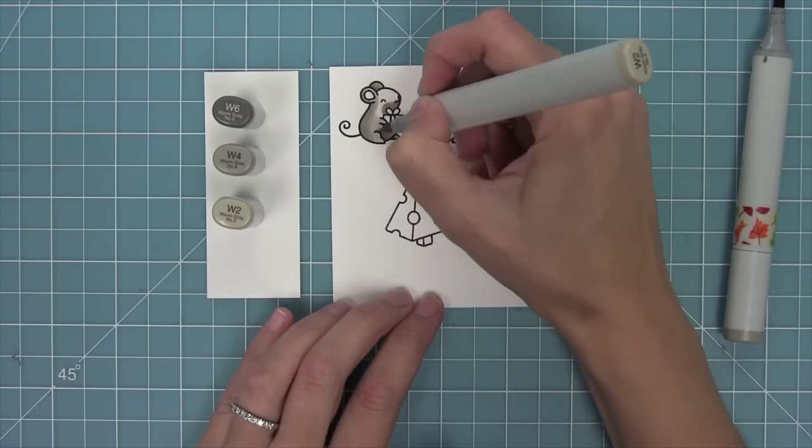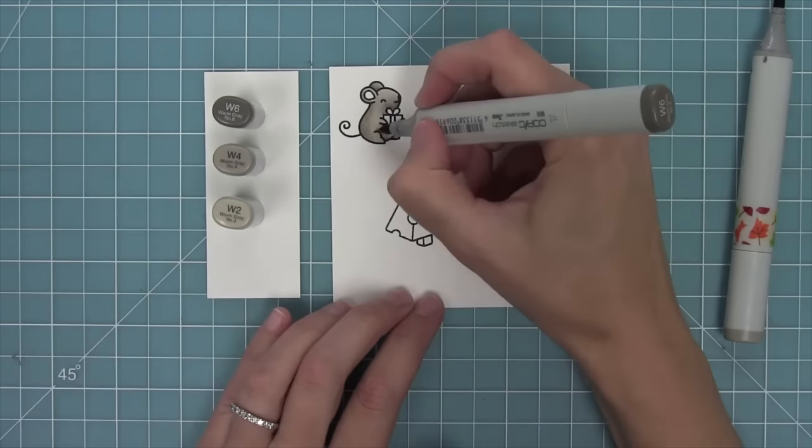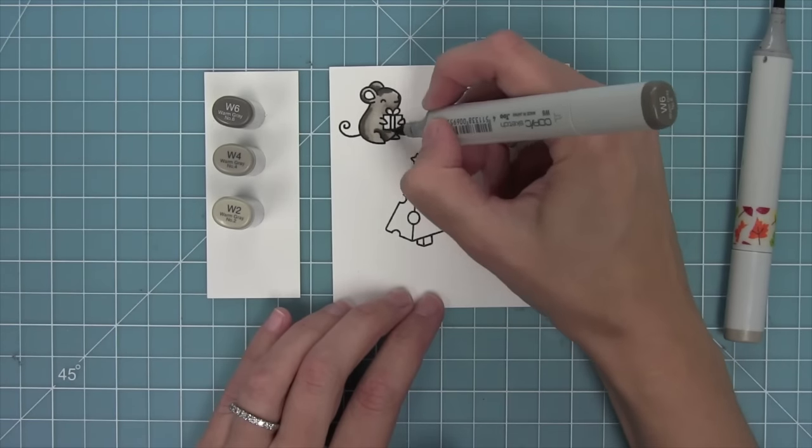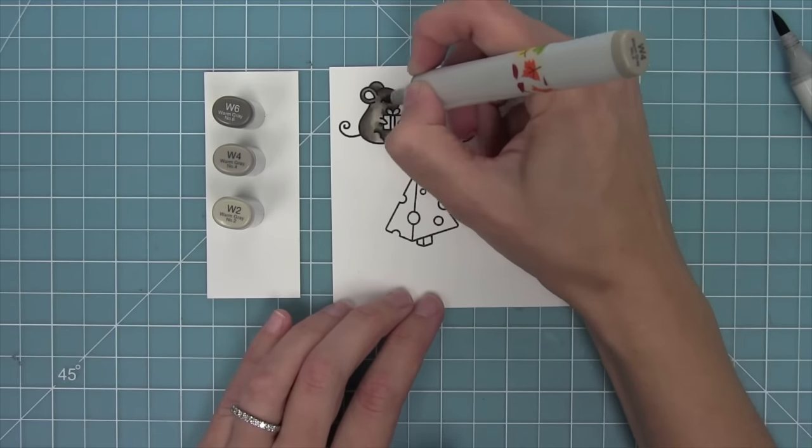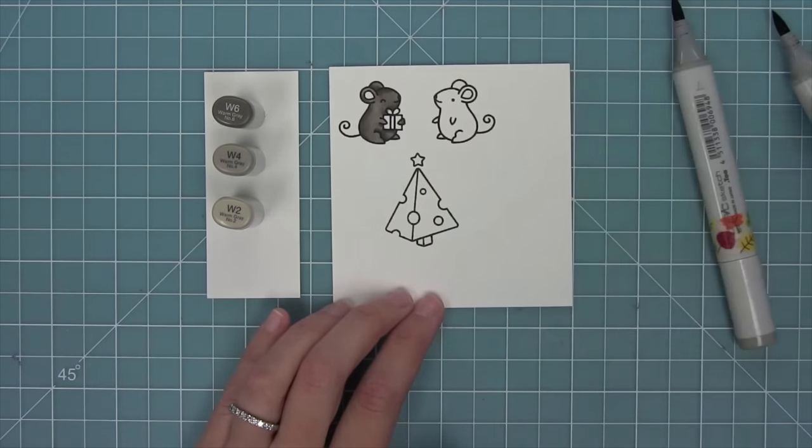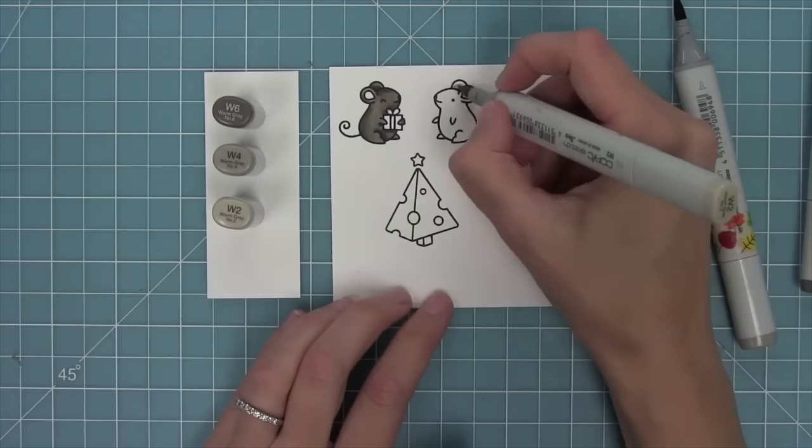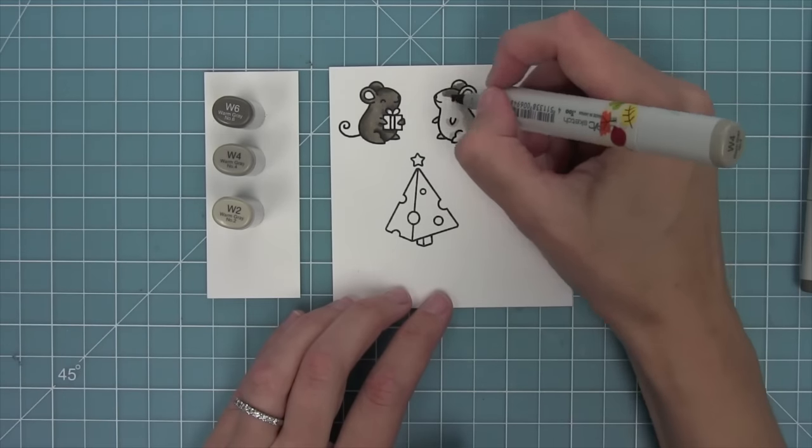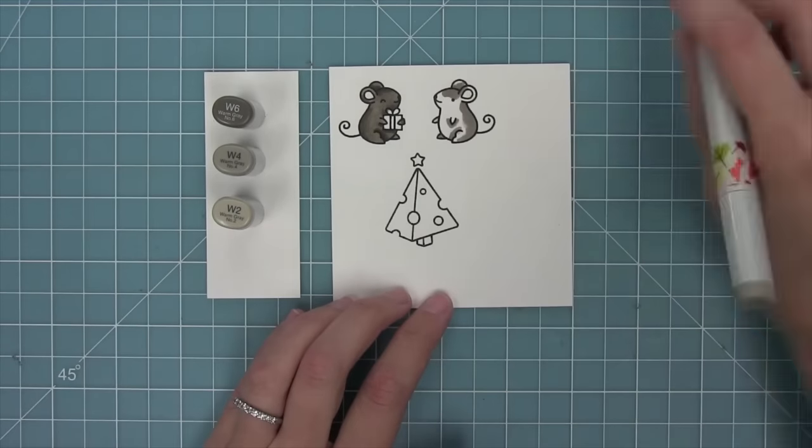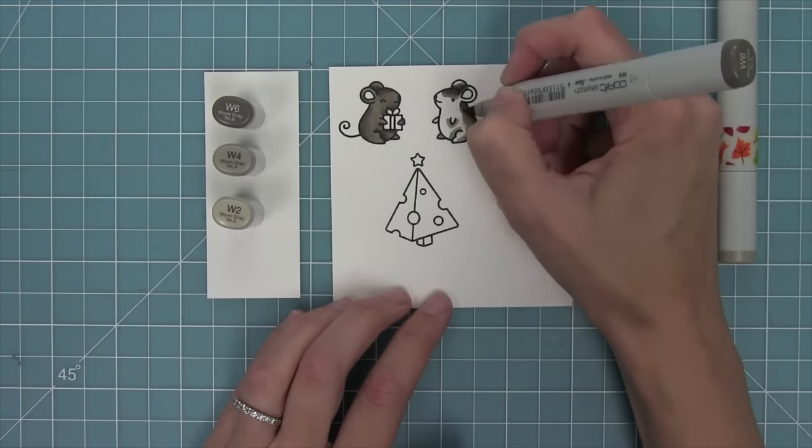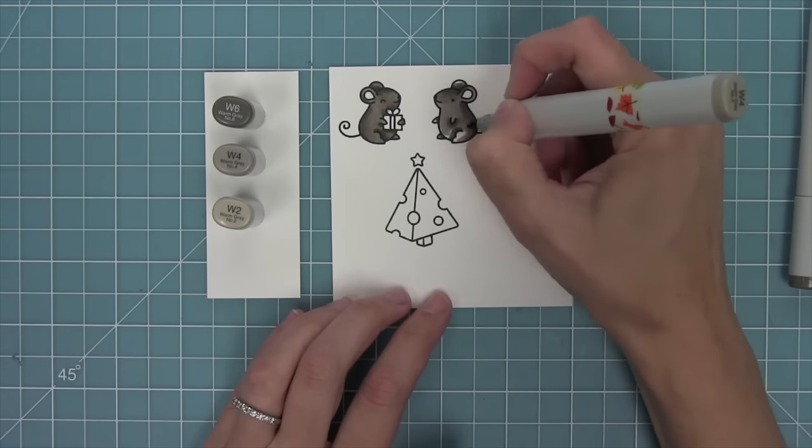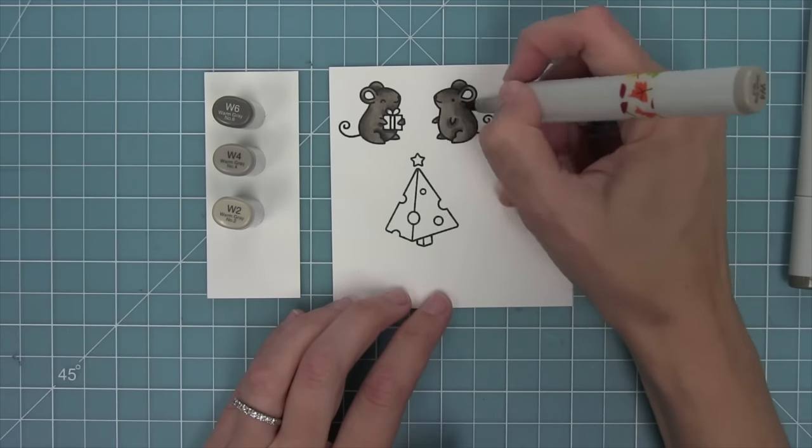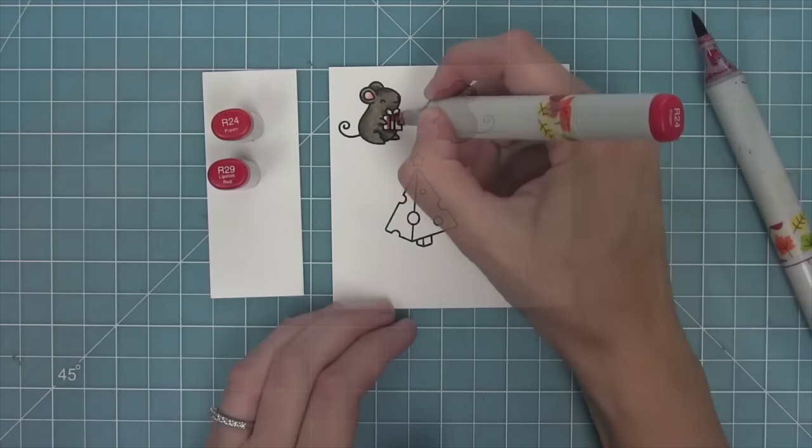I'm going to use my Copic markers to color in these mice and I love using warm gray for mice because they look like a dirty gray brown. What I like to do is start with my lightest color, then lay down my medium color and then my dark over top of that, and then blend it out with my medium. The reason I lay down that light color first is just to wet the paper a little bit so that these colors blend together really well.